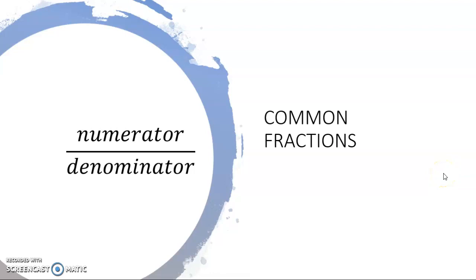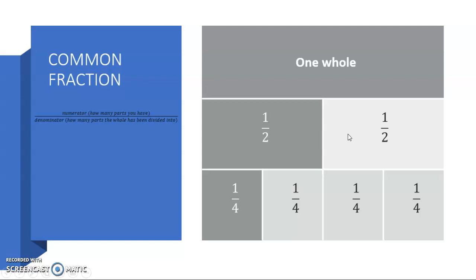If we have a look here, I have a little fraction wall here on the right hand side with one whole at the top, then two halves and four quarters. The numerator is how many parts you actually have, and the denominator is how many parts the whole has been divided into.